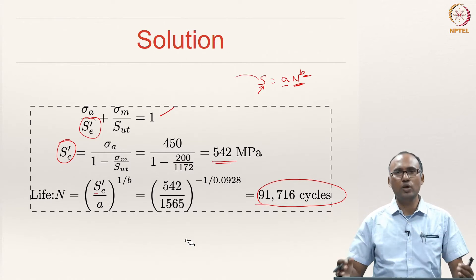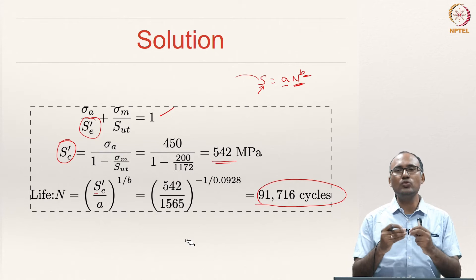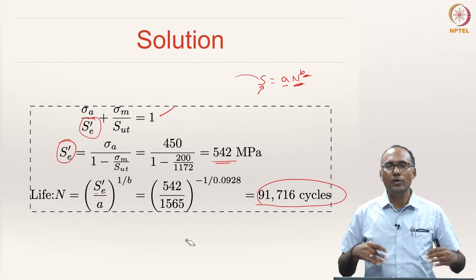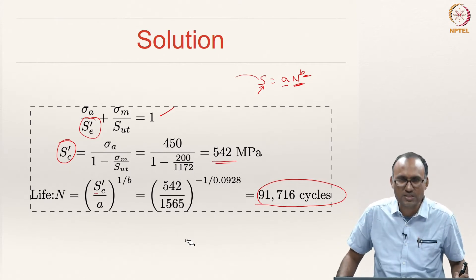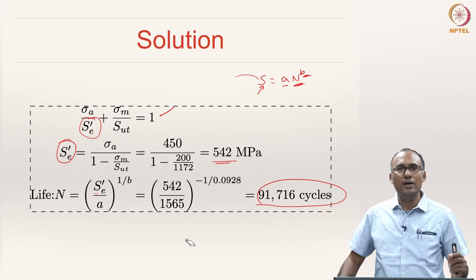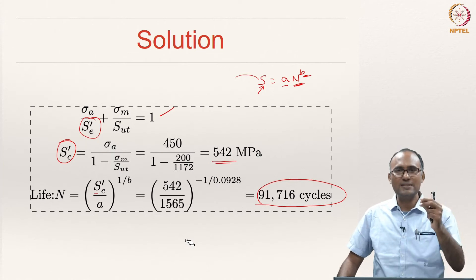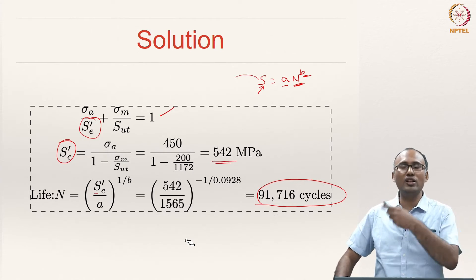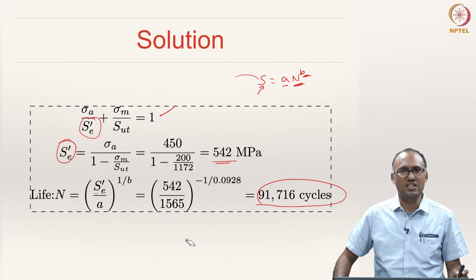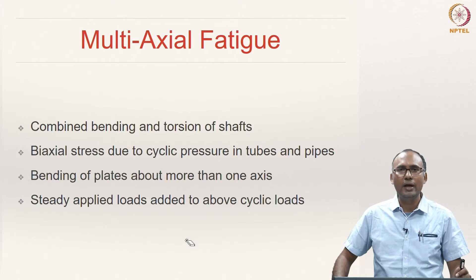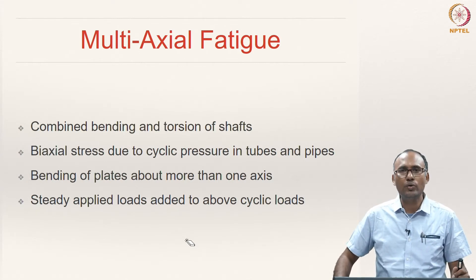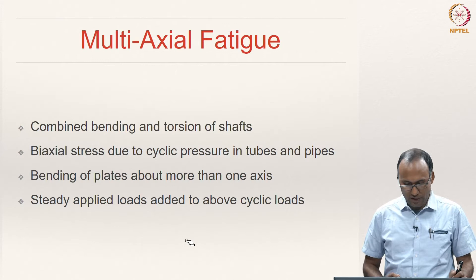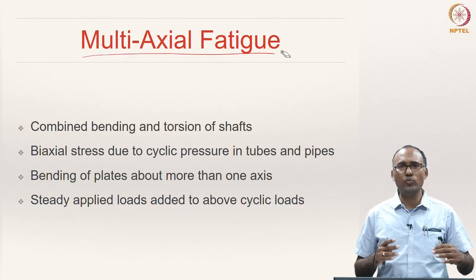But when you have multiaxial loading, the stress is a tensor and hence you will have various components of the stress and they may be changing as well. Your stress is cycling between two values, but the stress state we have been talking about is uniaxial. When you have multiaxial loading you need to worry about all six components of the stress tensor, and hence we need to see how one would actually study the failure when the component is subjected to multiaxial loading — that is what we designate as multiaxial fatigue.